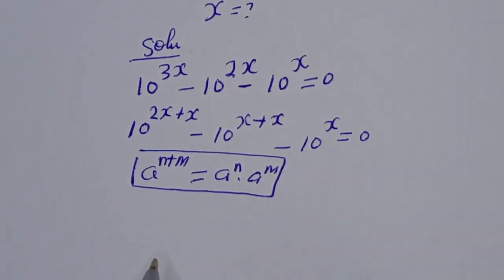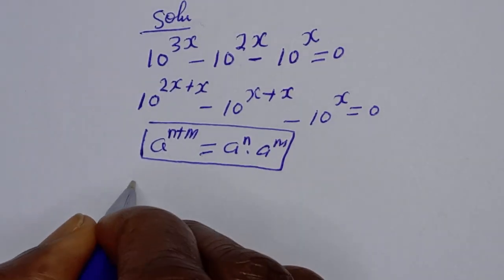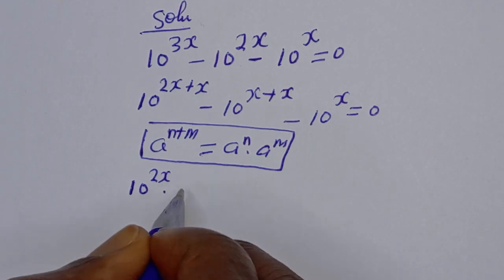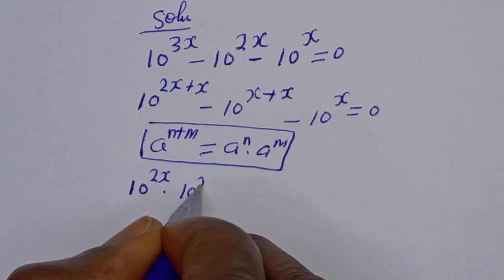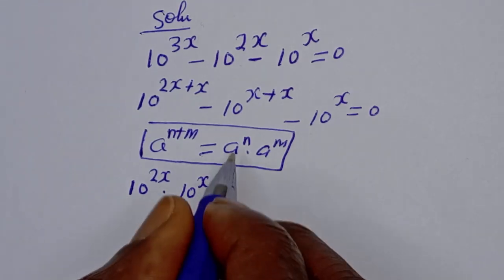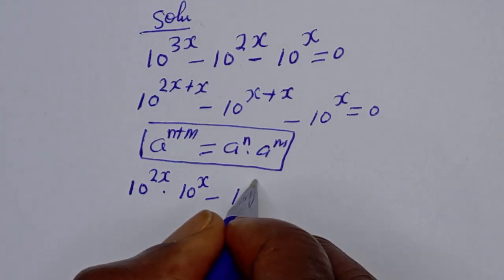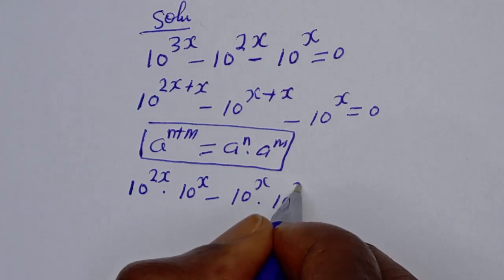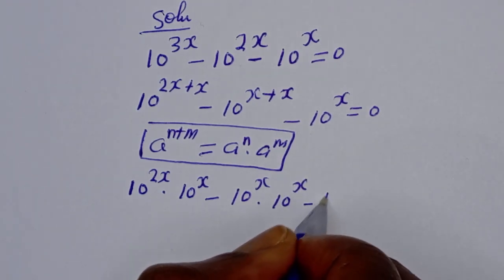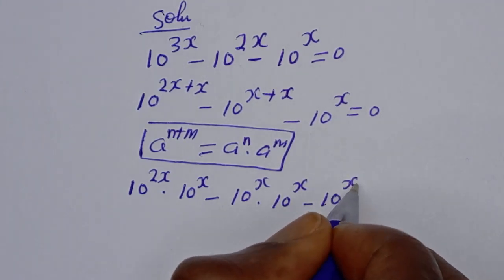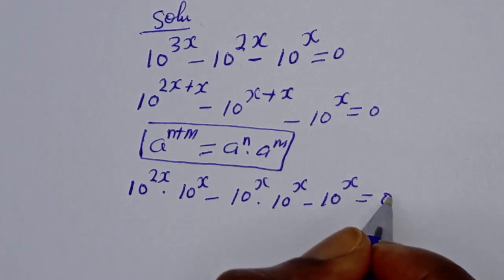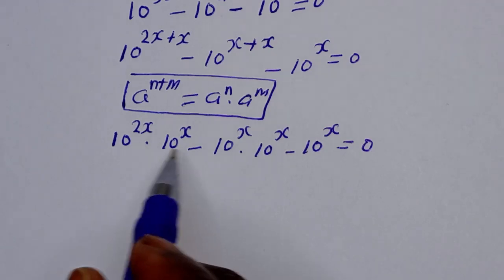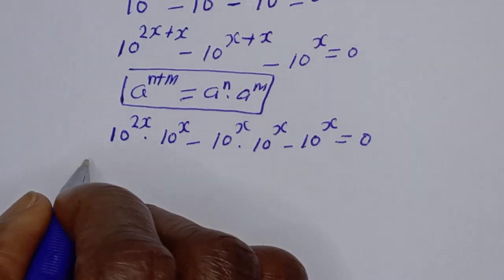Then this can be written as 10 raised to power 2s multiplied by 10 raised to power s, minus 10 raised to power s multiplied by 10 raised to power s, minus 10 raised to power s, is equal to 0. If you look at this, you can see that 10 raised to power s is common.